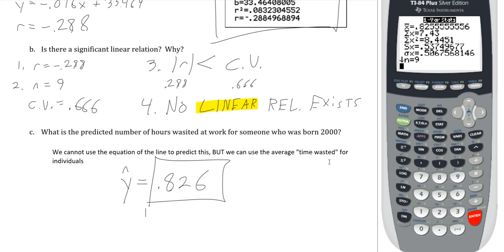That's everything for section 4.2. Note that for the last question, since there is no linear relationship, you also cannot interpret either the slope or the y-intercept. At this point you should be able to complete all the homework for section 4.2. I recommend doing that before moving on into 4.3 and 4.4. If you have any questions, feel free to put those in the comments below or ask your instructor. I hope you have a nice day.